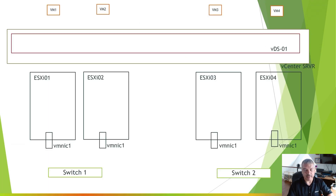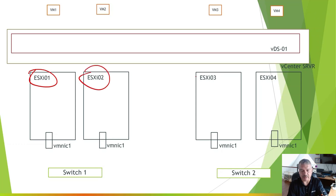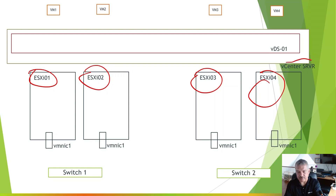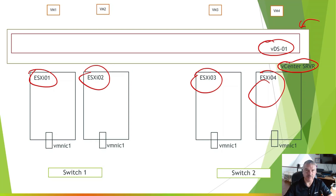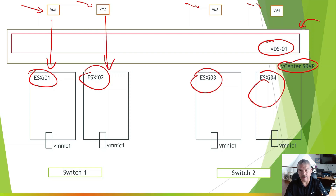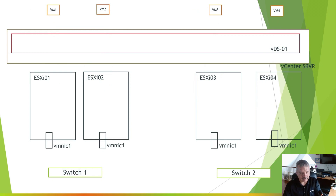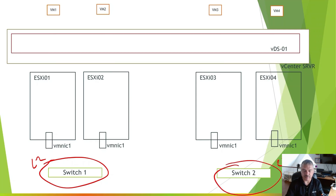Let's talk about what an overlay network is. I've got a PowerPoint presentation here. We have four ESXi hosts in my environment — I'm just showing four in this example. I have my vCenter server, and in there I've got a vSphere distributed switch called VDS01. I've got various virtual machines at the top: VM1 on host 1, VM2 on host 2, VM3 on host 3, VM4 on host 4. I've got some physical switches down here — these are just layer 2.